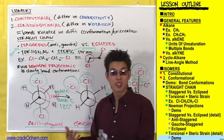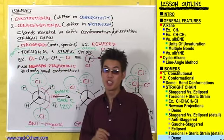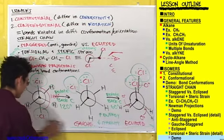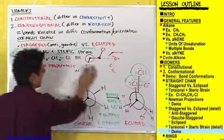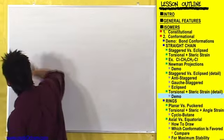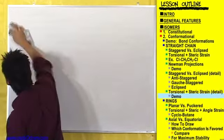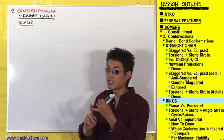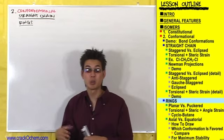That's everything you need to know about conformational isomers for straight chain compounds. But there's one more situation where you have to deal with conformational isomers, and that's with ring compounds. To recap: the first type of isomers were constitutional isomers, which differed in connectivity. The second type were conformational isomers, which differed in how their bonds were rotated. Straight chain compounds can be in anti-staggered, gauche staggered, or eclipsed conformations. Now the second situation involves rings.